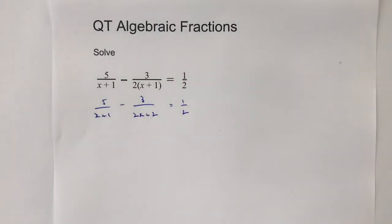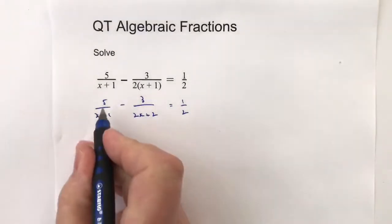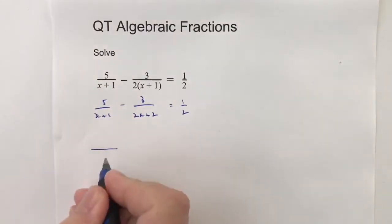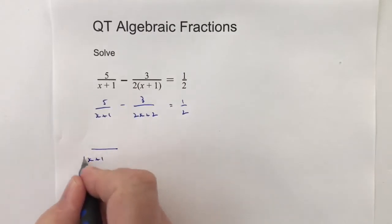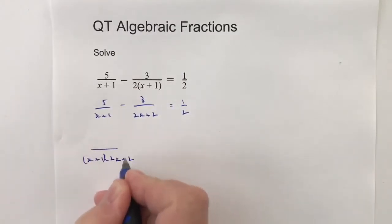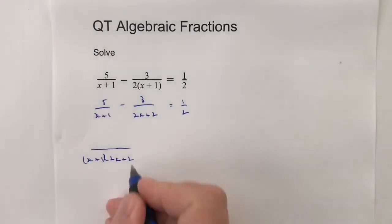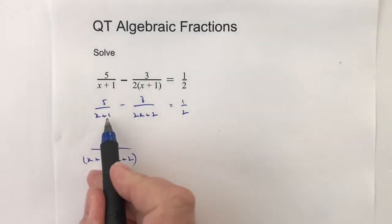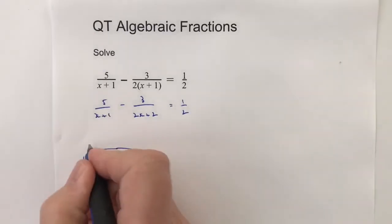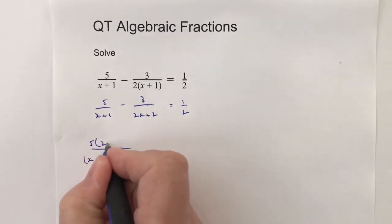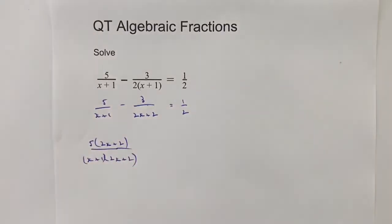So when we are subtracting any fraction we need to make sure the denominators are the same and probably the easiest way to do that in this particular case is to multiply them together. So the bottom denominator for this fraction is going to become x plus 1 times 2x plus 2. Now the problem is, because I've multiplied the bottom by 2x plus 2, I have to multiply the top so I'm going to multiply that also by 2x plus 2.